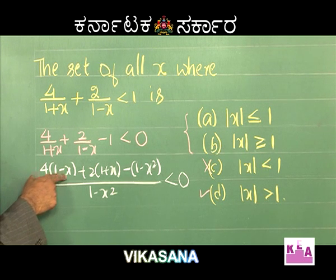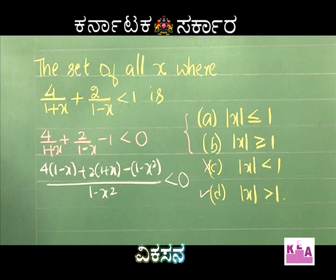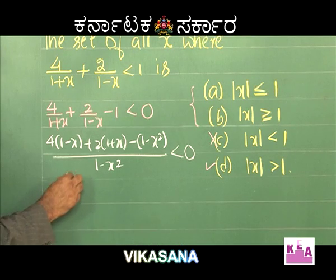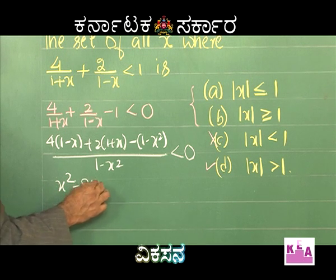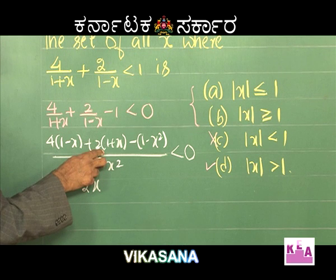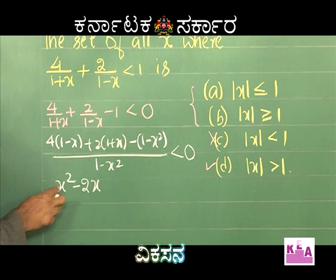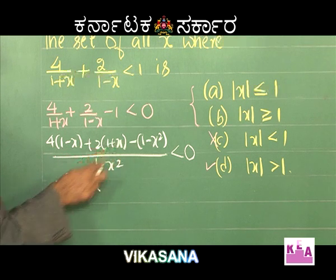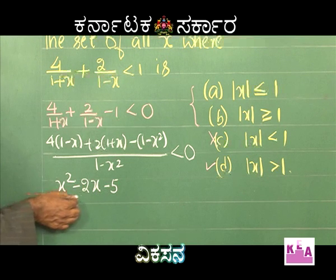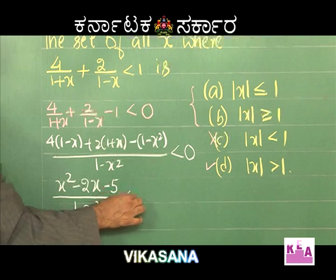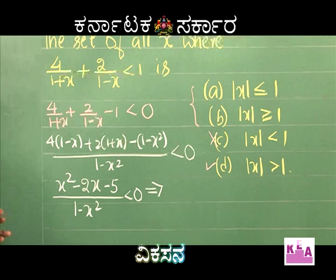Expanding the numerator: 4 - 4x + 2 + 2x - 1 + x². Collecting terms: x² + (2x - 4x) + (4 + 2 - 1) = x² - 2x + 5. So the inequality becomes (x² - 2x + 5) / (1 - x²) < 0. Now look at the numerator and denominator.